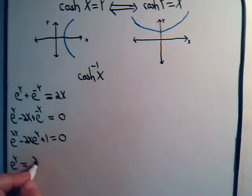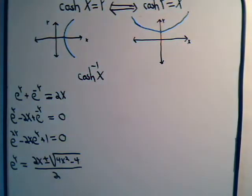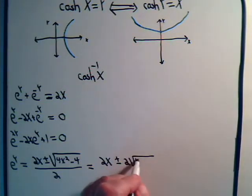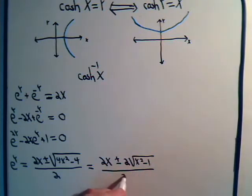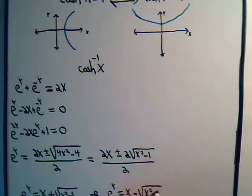That will equal 2x plus or minus the square root of 4x squared minus 4 divided by 2. We can factor this 4 out and take it to the outside of the square root sign, and we'll get plus or minus 2 square root of x squared minus 1 divided by 2. So now we have two expressions for e to the y: it equals x plus the square root of x squared minus 1, or e to the y equals x minus the square root of x squared minus 1.